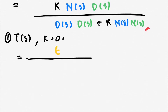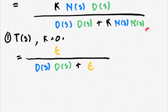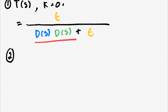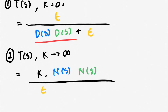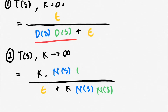As k equals zero, we see the value of the transfer function becomes the open-loop poles. And as k approaches infinity, the transfer function approaches the open-loop zeros.